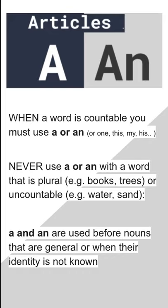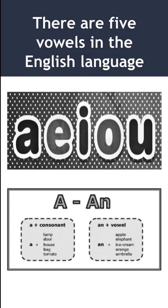A and an are used before general nouns. In the English language there are five vowels: a, e, i, o, u. If the word begins with a vowel — a, e, i, o, u — or the sound of a vowel, like 'hotel' which sounds like it starts with an 'o' sound, then we use an.